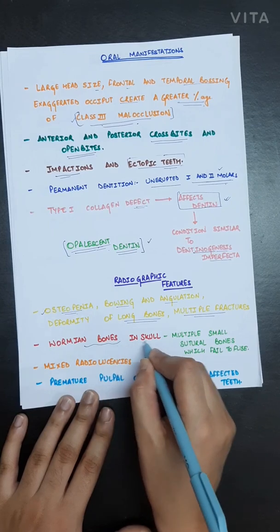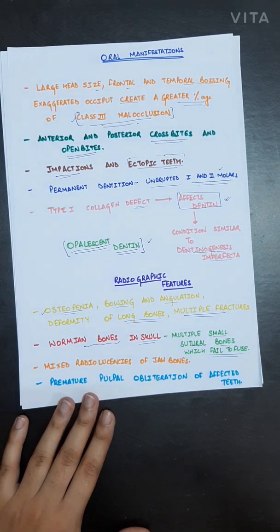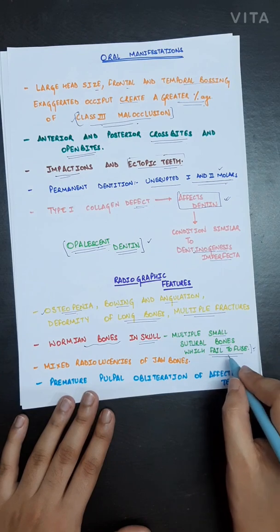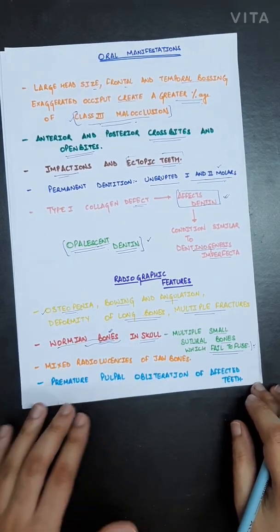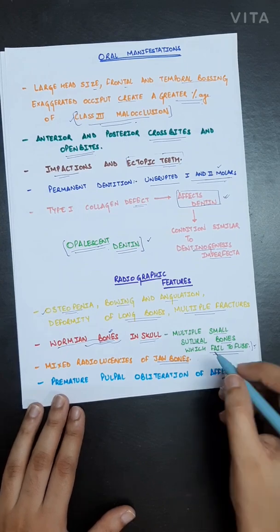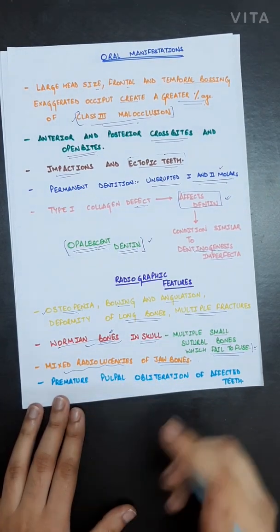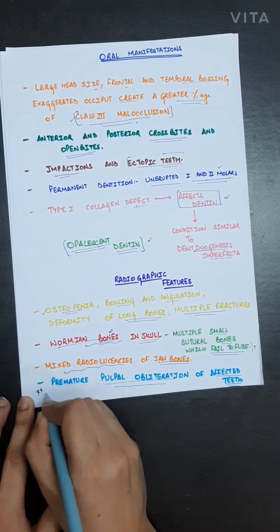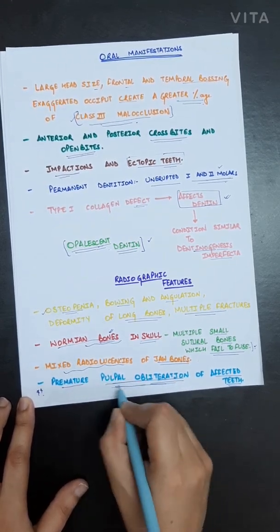Wormian bones — multiple small sutural bones that fail to fuse — are present in the skull. Mixed radiolucencies are seen in the jaw bones, with radiopacities and radiolucencies at different areas. Importantly, premature pulpal obliteration of affected teeth is a significant radiographic finding in osteogenesis imperfecta.